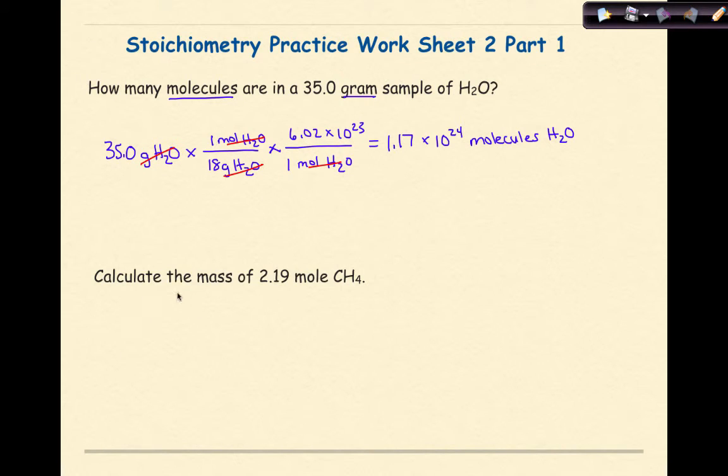Let's look at our next problem. Calculate the mass of 2.19 moles of CH4. So, my given is 2.19 moles of methane CH4. Multiplication sign and a line. I know that 1 mole of methane CH4 is equal to the gram formula mass of methane, which is 16. 16 grams CH4. I'm going to cross out my units to make sure I've set this up correctly. Moles cancel moles. So, 2.19 times 16 gives me 35.0 grams of methane.